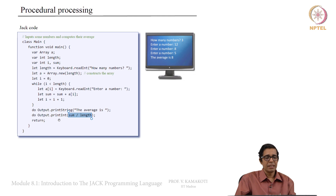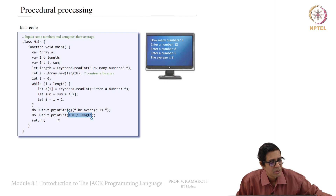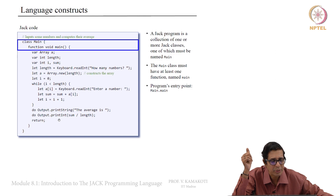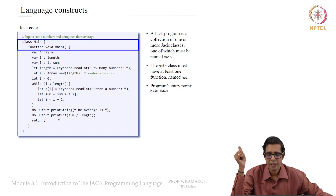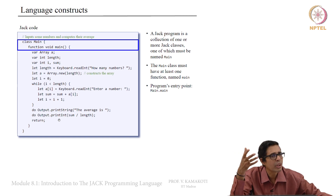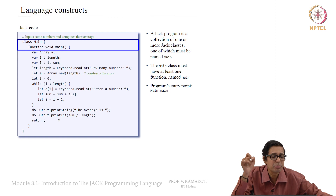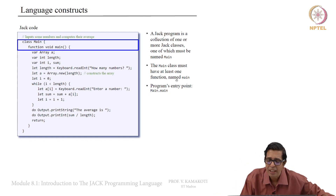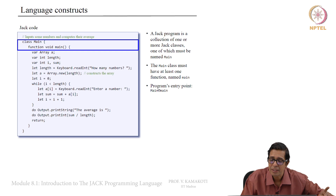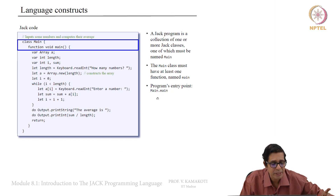To sum up: a Jack program is a collection of one or more Jack classes, one of which must be named capital Main. The Main class must have at least one function named main. The program's entry point is always Main dot main.